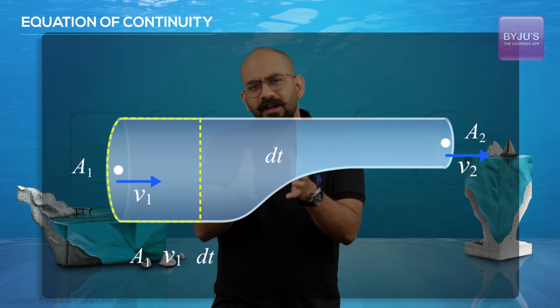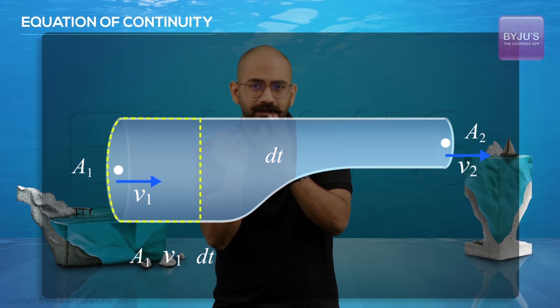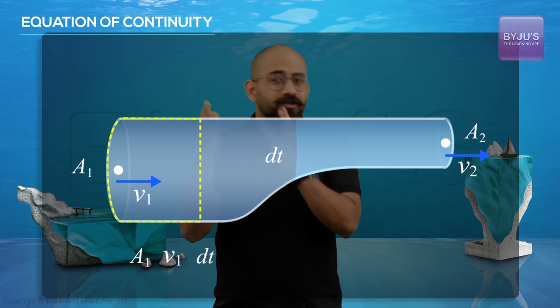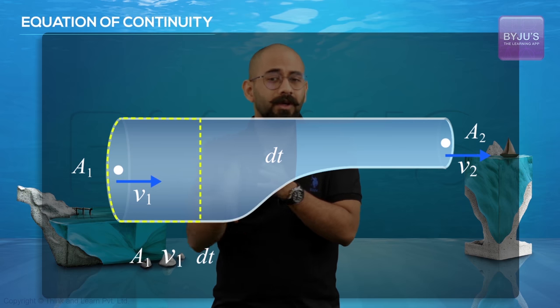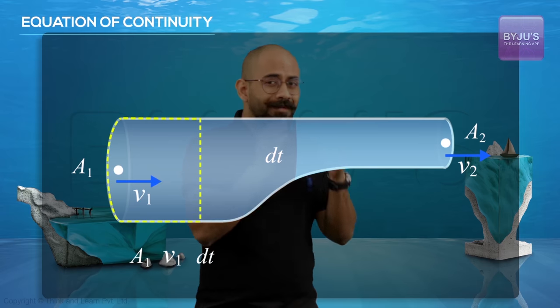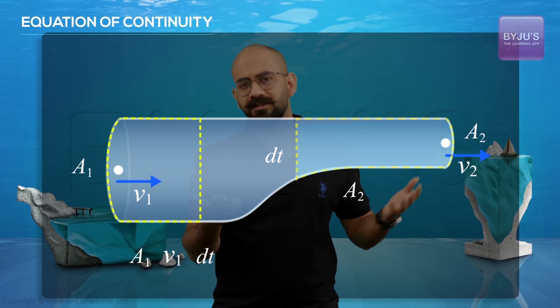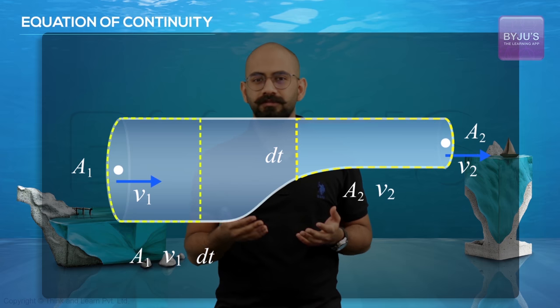Because dt is extremely small, we can assume the area doesn't change within that small distance. So the volume would be A1V1dt. On the other side, the volume gained will be A2 into this distance, which is A2 into V2 into dt.